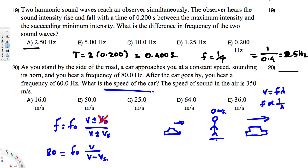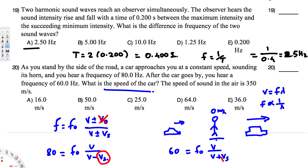Now we have two equations. We need to solve for v_source. We don't know f₀ or v_source, so since we have two unknowns, we divide the two equations to eliminate f₀. Dividing equation one by equation two gives us 80 over 60.